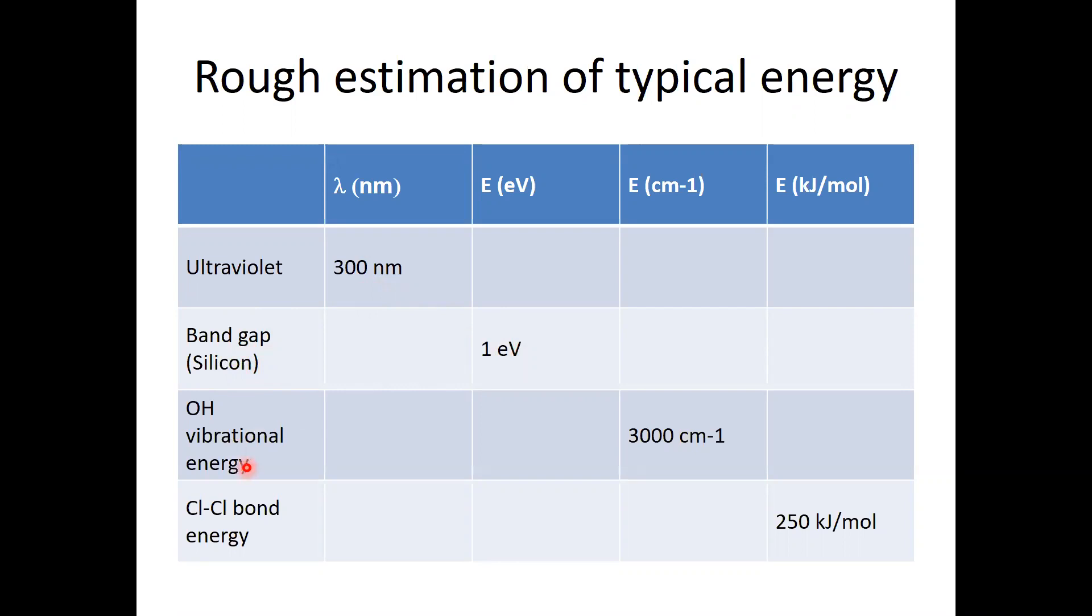And in the chemistry, vibrational energy is quite important, especially OH vibrational energy you have to think about when you use water. And the absorption is around 3,000 Kaiser. And when you think about the chemical bond, this is a C-C bond, which is not so strong, but kind of typical, typically dissociated by light. It's around 250 kJ per mole.